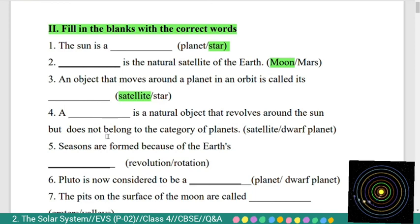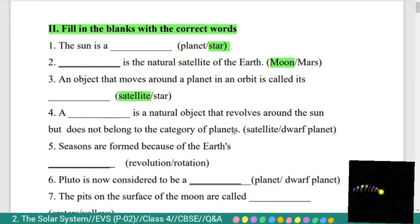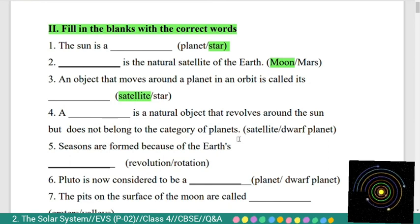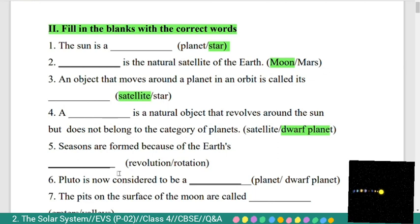Fourth: a dash is a natural object that revolves around the sun but does not belong to the category of planets — satellite or dwarf planet? It is dwarf planet. Fifth: seasons are formed because of the Earth's revolution or rotation. It is revolution.